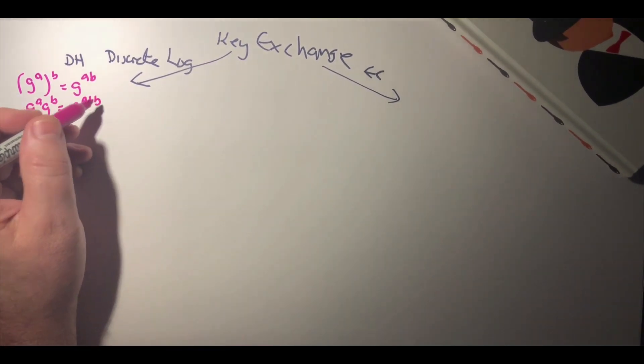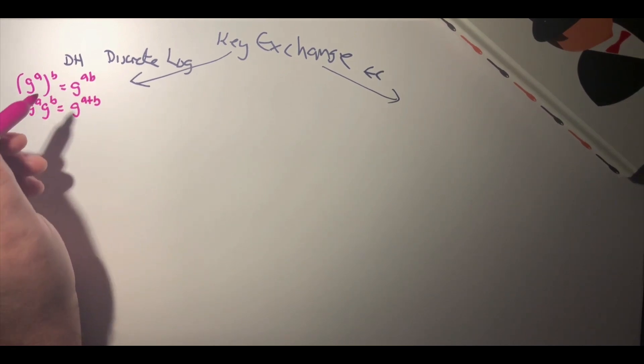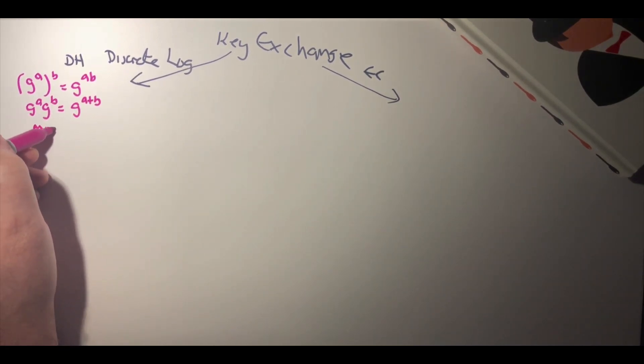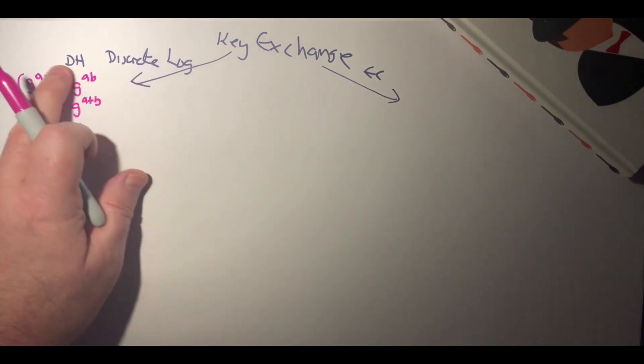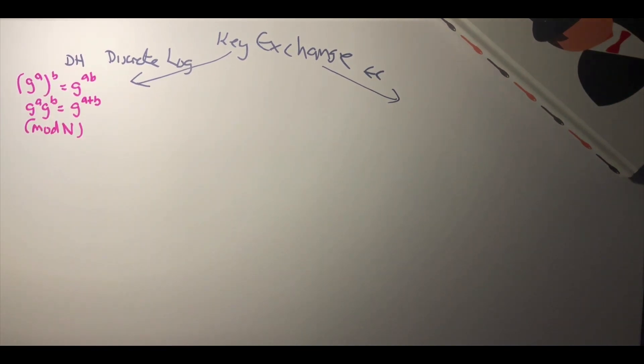We make this discrete logs by taking the mod operation, mod n. This creates what's called a finite field so that we only get values between zero and n minus one, constraining the values that we return.